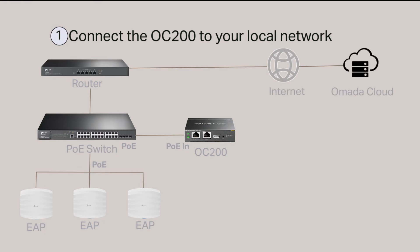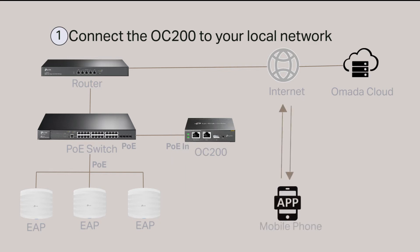The OC200 requires an internet connection to complete the setup via the Omada cloud. When the OC200 with factory default settings has an internet connection, the cloud LED will flash slowly. Now connect your mobile phone to the internet and you can set up the TP-Link OC200 via the Omada app on your mobile phone.